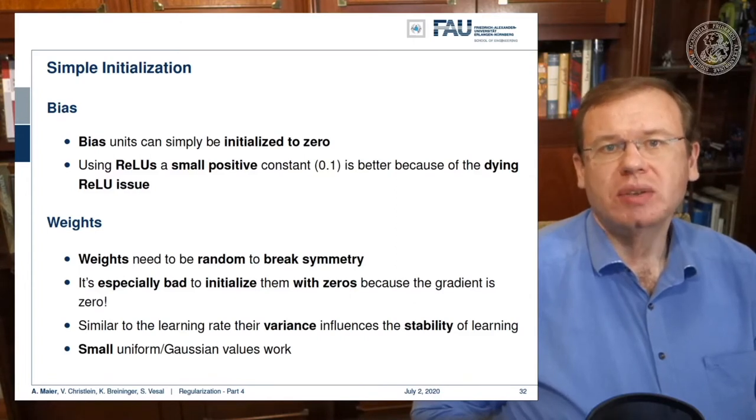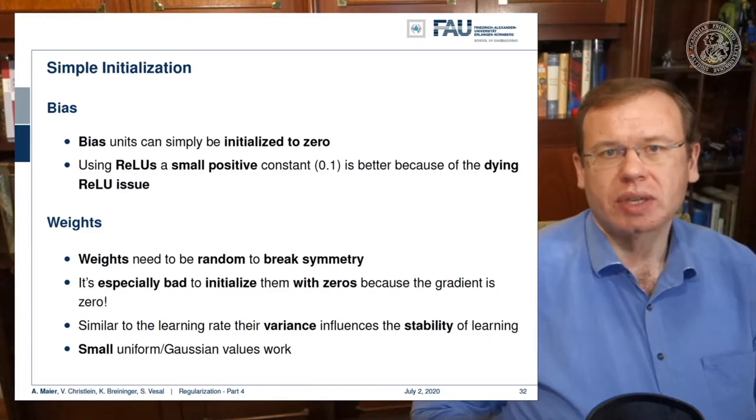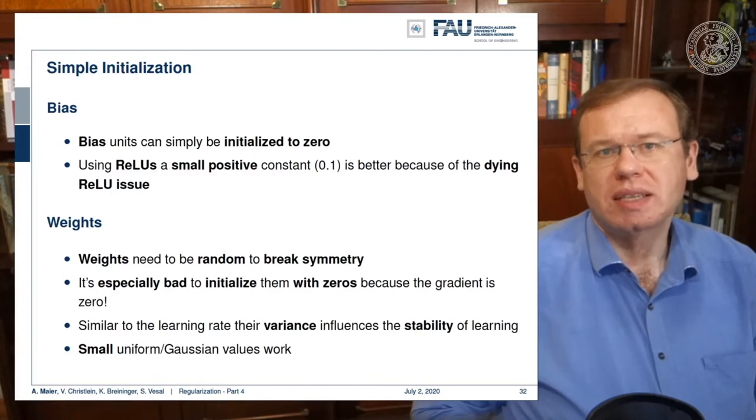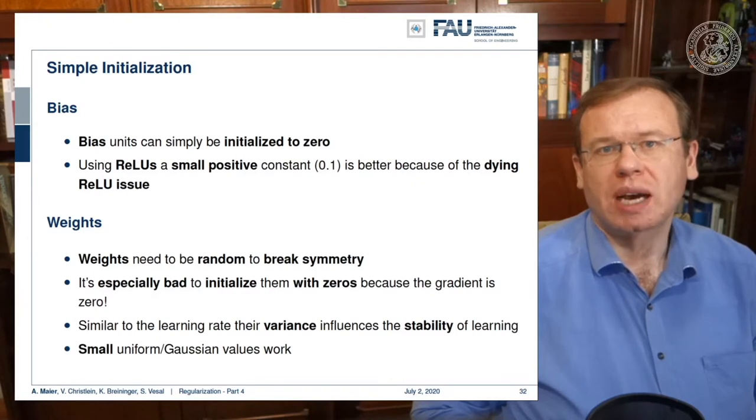For the weights, you need to be random to break symmetry. We already had this problem. In dropout, we saw that we need additional regularization in order to break the symmetry. Also, it would be especially bad to initialize them with zeros, because then the gradient is zero. Similar to the learning rate, the variance influences the stability of the learning process. Small uniform Gaussian values work.